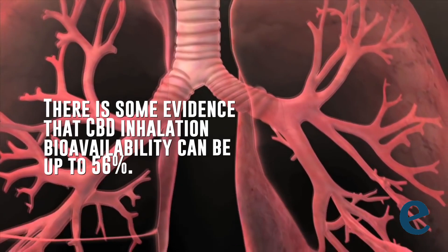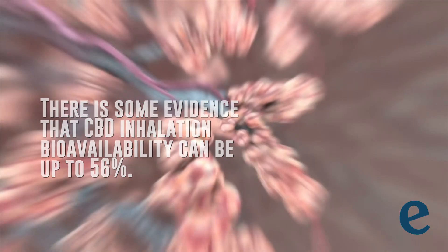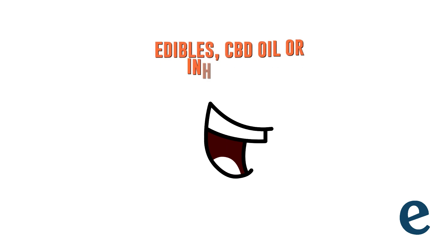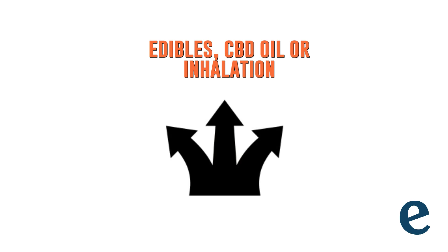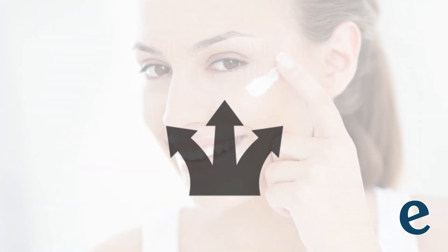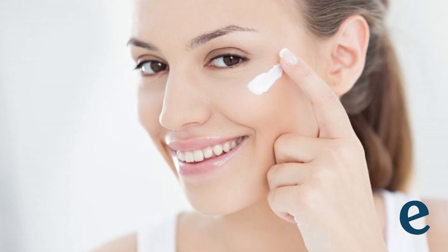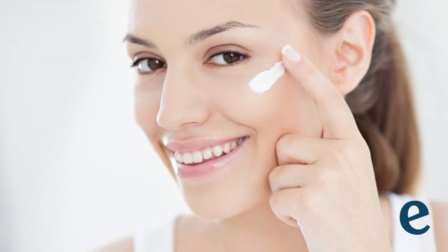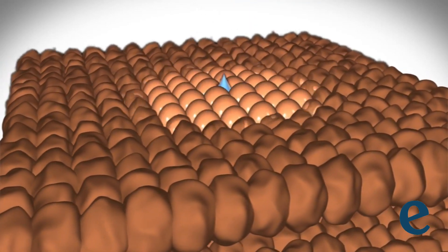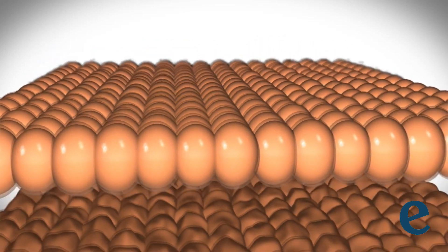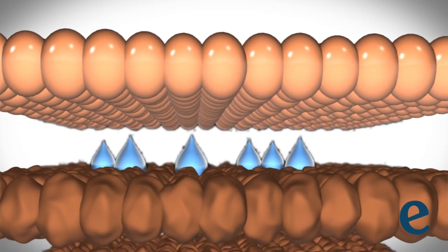There is some evidence that CBD inhalation bioavailability can be up to 56%. The fourth method is topical bioavailability. In all the methods listed above, the most common way to get CBD into your bloodstream is via your mouth — be it edibles, CBD oil, or inhalation. However, there is an alternative method if you don't want to inhale CBD or take it orally: you can apply it topically to the skin through cream, lotion, serum, lip balms, salves, and patches. In topical bioavailability, the CBD enters your bloodstream through the skin, distinct from oral forms where the compound passes through your lungs, sublingual glands, or digestive system.